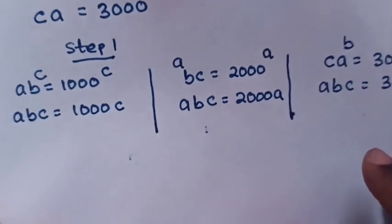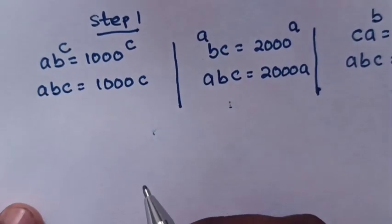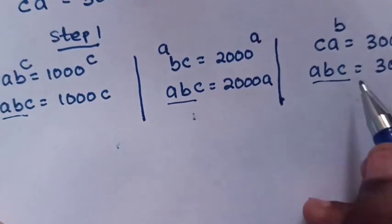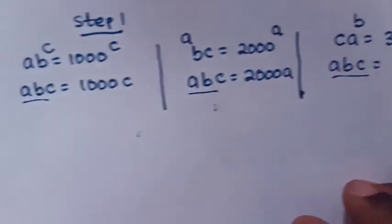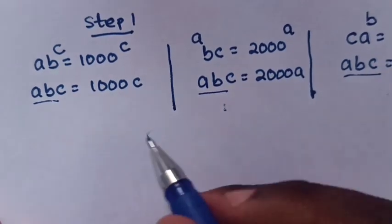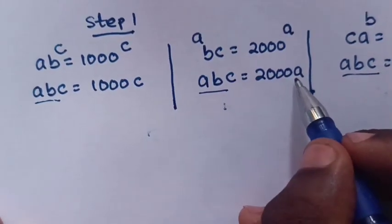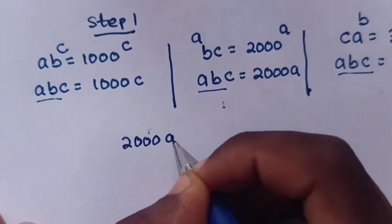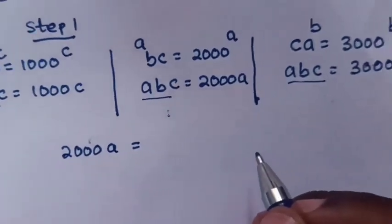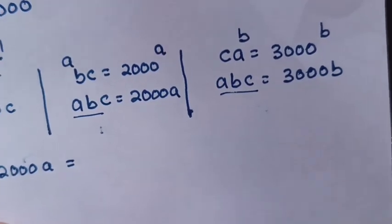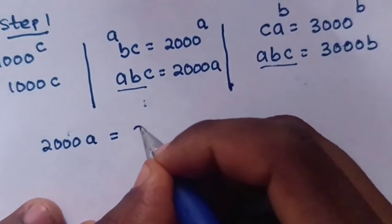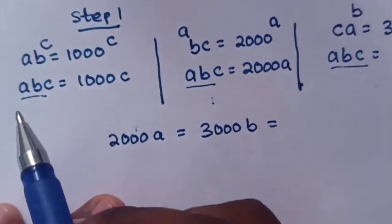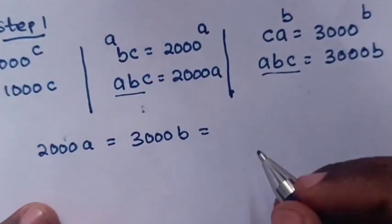Since all three expressions equal ABC, their values are equal: 2000A equals 3000B equals 1000C.